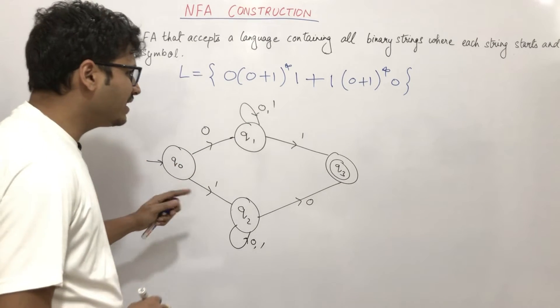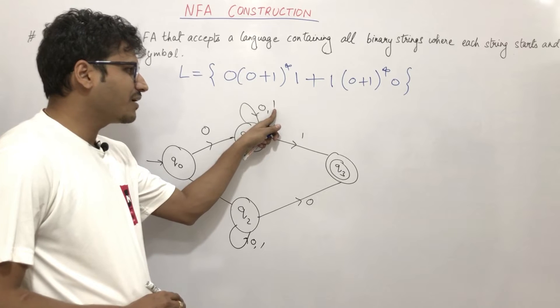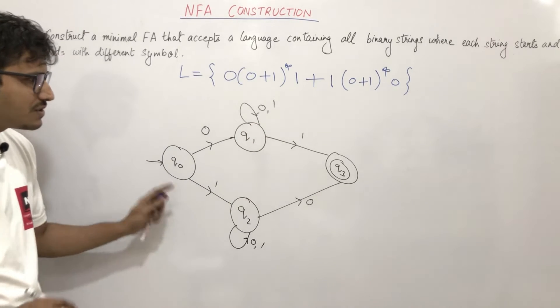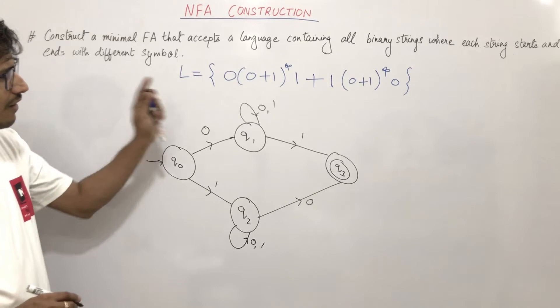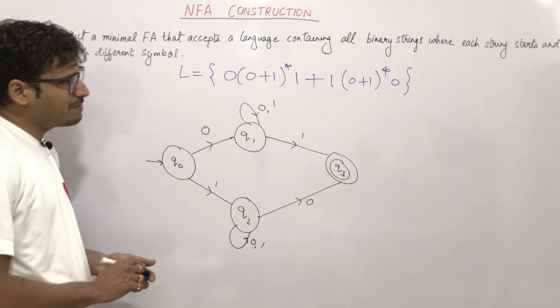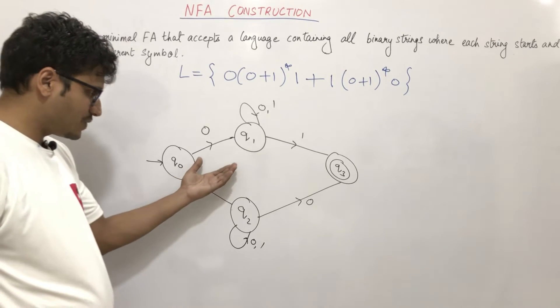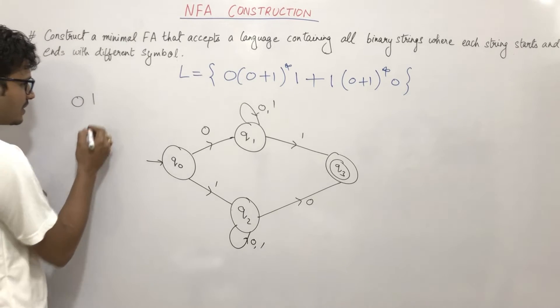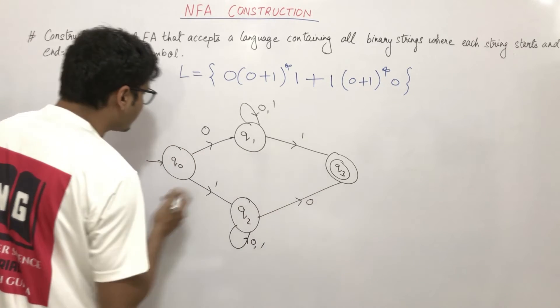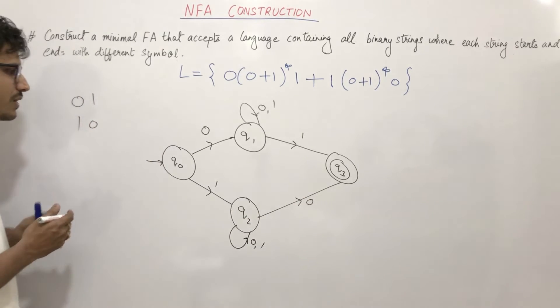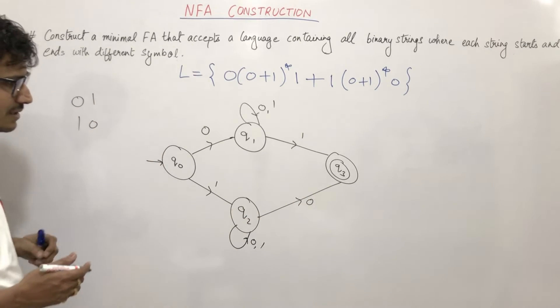Because if it was DFA, then the 1 transition here wouldn't be possible since 1 transition has already occurred. This is NFA. When we made this NFA, first we checked the basic requirement. It was saying start with 0 and end with 1 - yes, starting with 0 ending with 1. Or start with 1 and end with 0. Different symbols - start and end with different symbols.